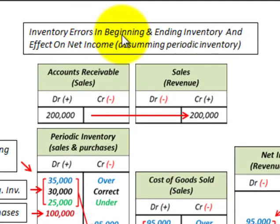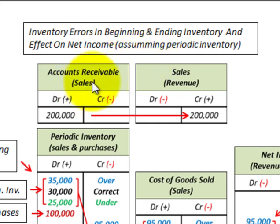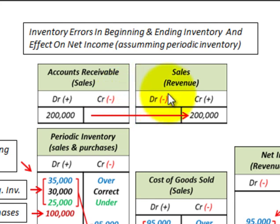Here we're going to be looking at inventory errors in the beginning and ending inventories and the effect they would have on net income, balance sheet accounts, or income statement accounts. We're going to be using the periodic inventory method for our demonstration purposes. To determine how inventory errors affect other accounts, we set them up in T-account form and look at the flow between the various accounts.